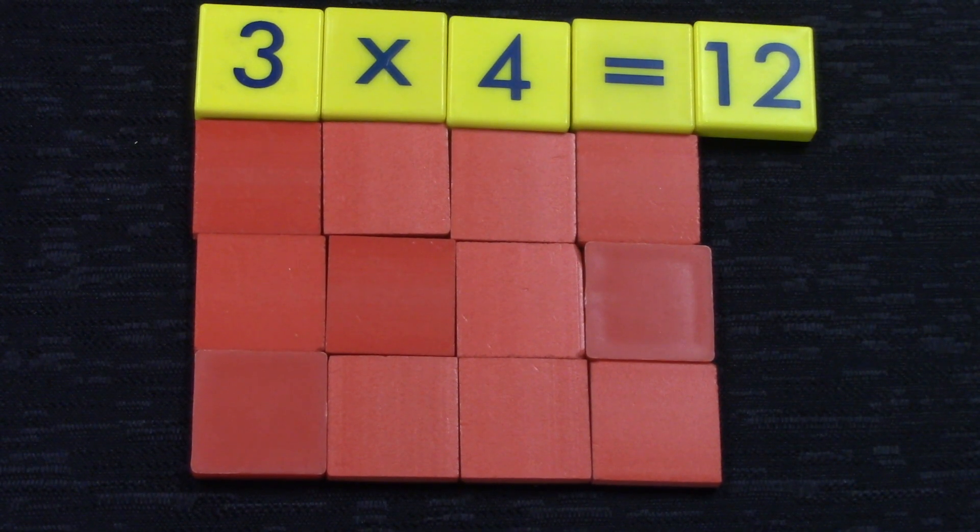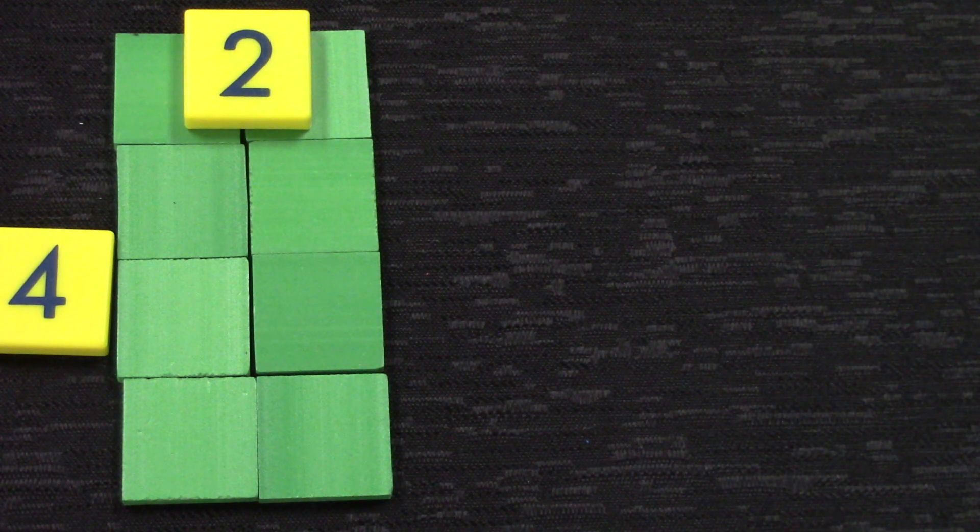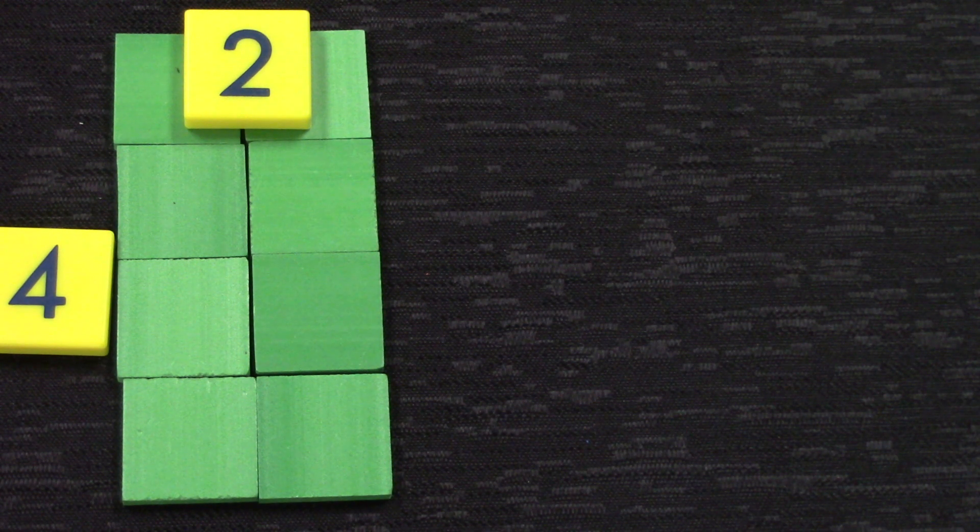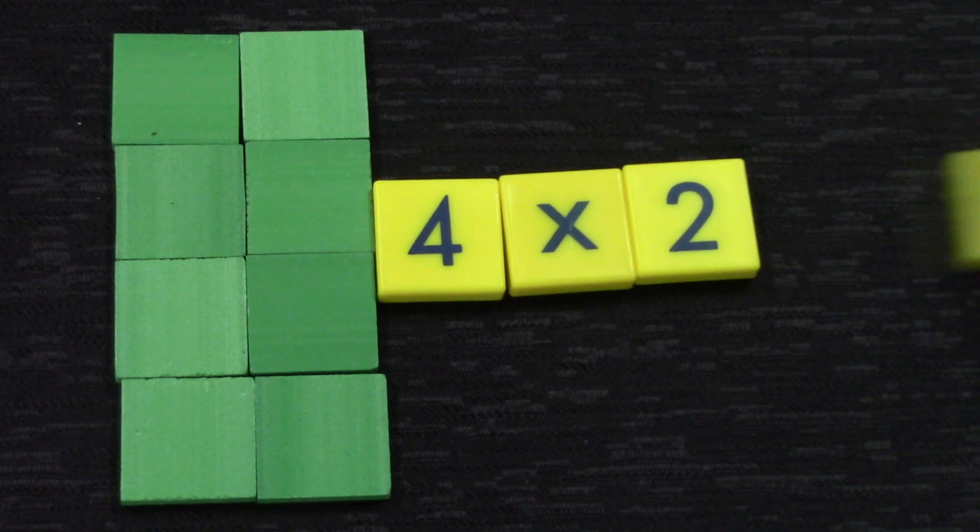Let's take a look at another array. How would we label this array? There are four rows with two in each row. This is a four by two array. If we were to write a number sentence, we would say four times two equals eight.